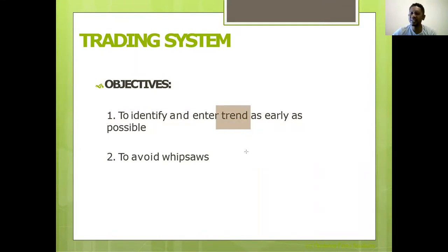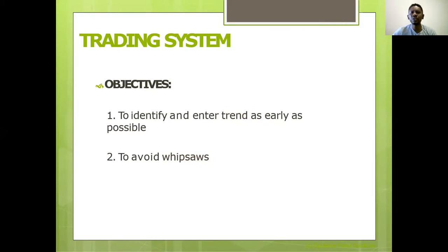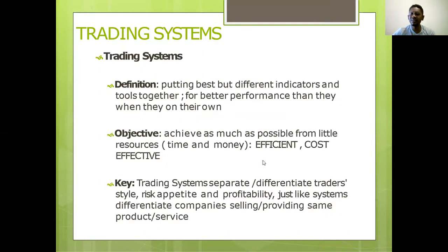If you can get a true, correct trend, your system is going to be a great system. A trading system is not a single indicator — it is a collection, a combination of indicators. You cannot claim to have a trading system if you are using only one indicator. You must put together more than one indicator and they must work efficiently together.